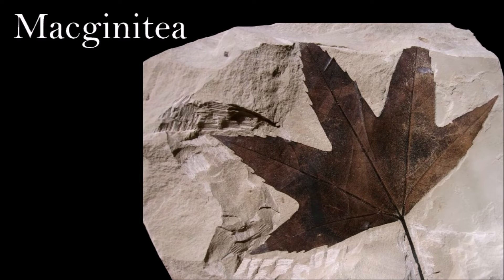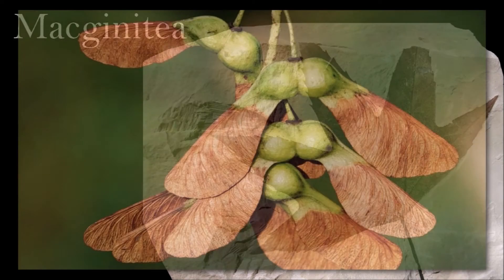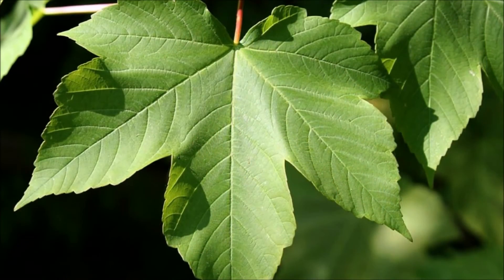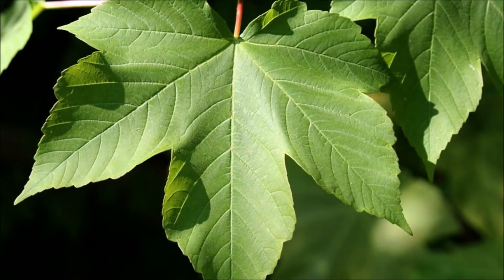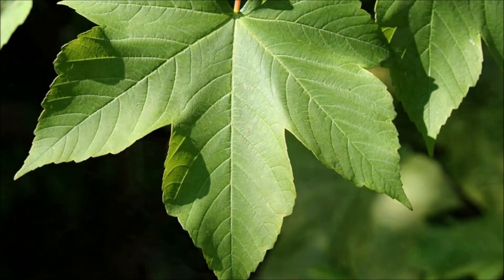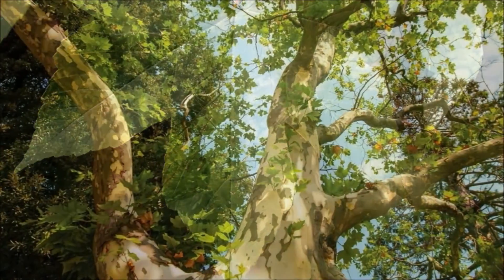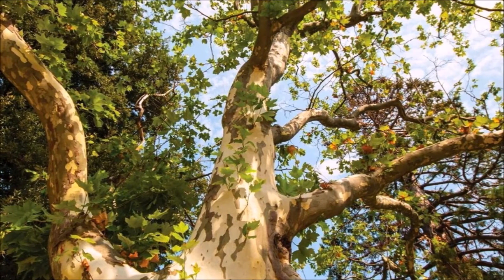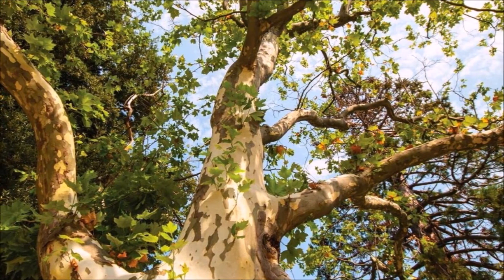Macginitiea is an extinct genus of plane tree that has been reconstructed by putting together different Platanus-like parts of plants that were repeatedly found next to each other at various localities in western North America. The leaves are large with five to seven palmately arranged lobes. The trees bore stalked globular masses of male flowers or female flowers, and were adapted for early colonization in open disturbed areas, especially close to water.